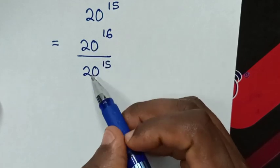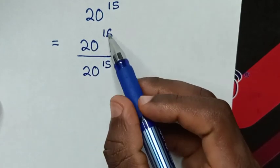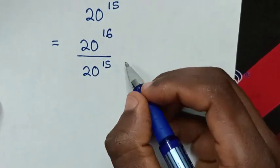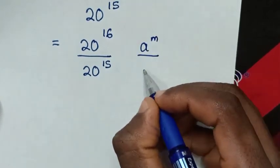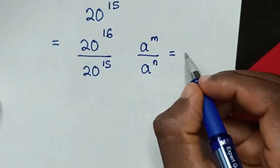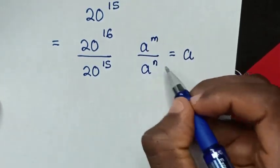Now in here is division of exponent with same base but different powers. So we will apply exponential rule that A power of M over A power of N is equal to A power of M minus N.